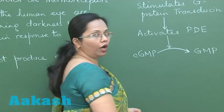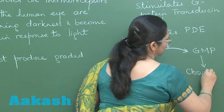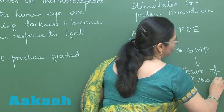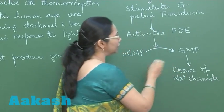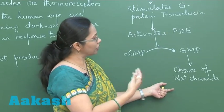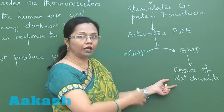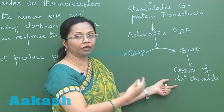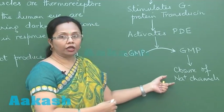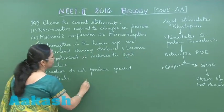Once this conversion of cyclic GMP occurs, it causes the closure of sodium channels. With sodium channels closed but the sodium-potassium pump continuously pumping out sodium, the photoreceptor cell becomes hyperpolarized — more negative on the inside. So option number 3 is the correct answer.